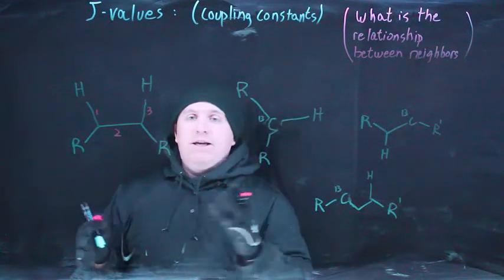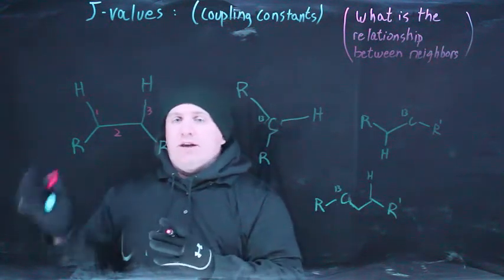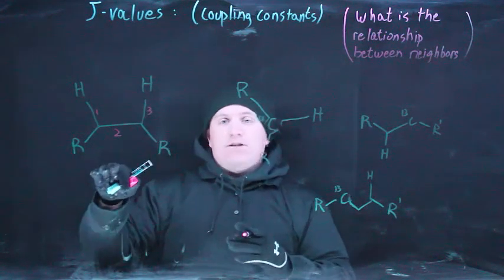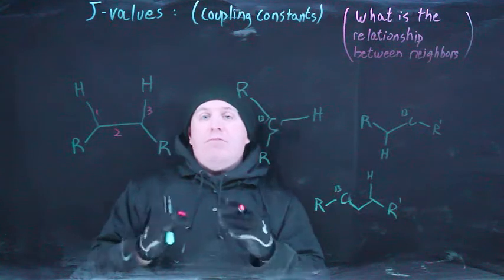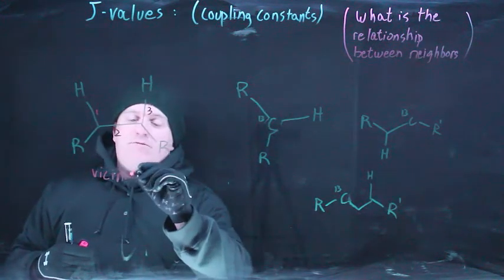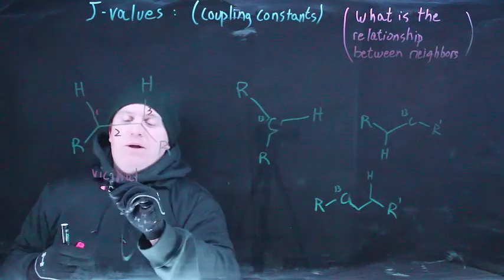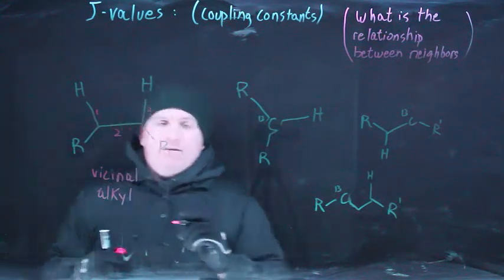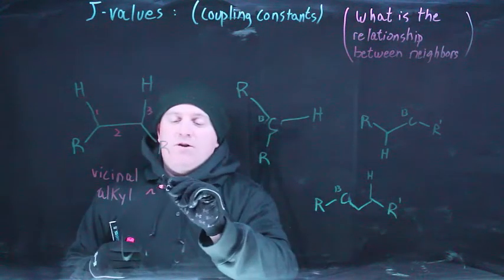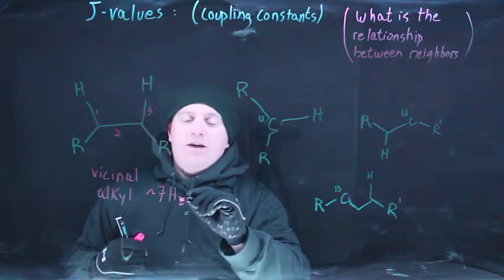Whenever you're dealing with normal multiplicity and you've got Pascal's triangle, and you're thinking of doublets and triplets and quartets and pentets, that's usually talking about how many three bond neighbors do you have. This relationship right here is called vicinal alkyl, but it basically is the boring normal J value, and this is going to be on the order of seven hertz.